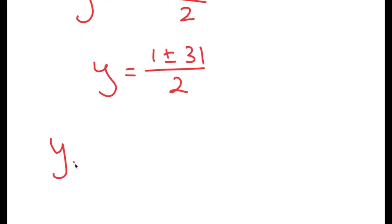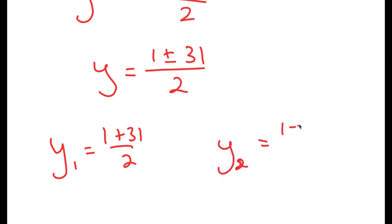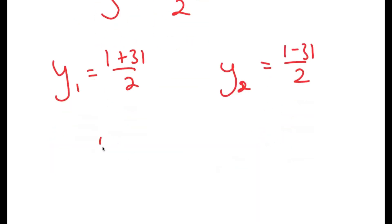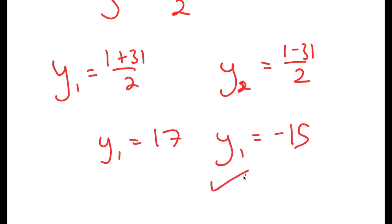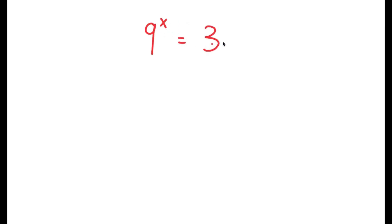So I get y equals 1 plus or minus 31 over 2, giving two solutions: y equals 17 and y equals negative 15. Now in this video, I'm going to solve the equation 9 to the power of x is equal to 36.